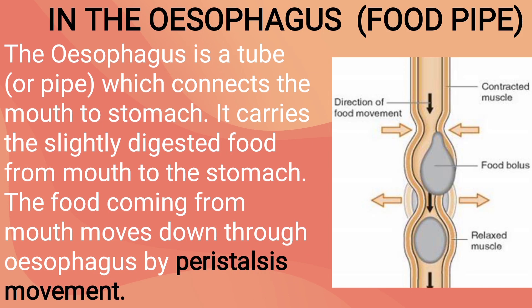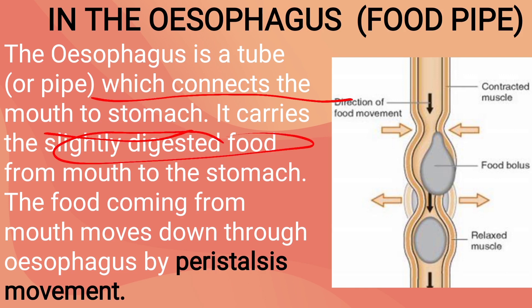The food is then transferred into the next part, the esophagus, also known as the food pipe. The esophagus is a tube which connects the mouth to the stomach. It carries slightly digested food from the mouth to the stomach. The food moves down through a wave-like movement known as peristalsis, as you can see in this picture.